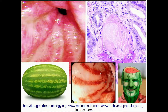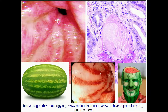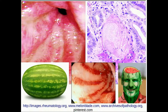This is also called watermelon stomach. Here is a better picture showing a more characteristic lesion — we are looking at the mucosa of the stomach, and in the lamina propria we see a dilated capillary with a fibrin thrombus. Sometimes these fibrin thrombi are associated with myofibroblastic proliferation around the capillaries.